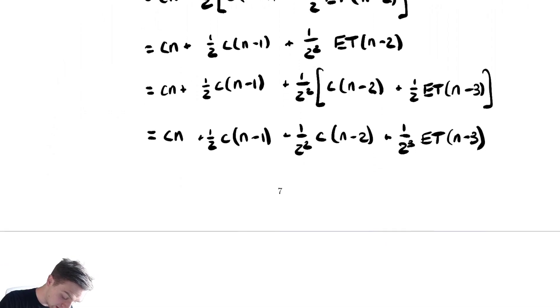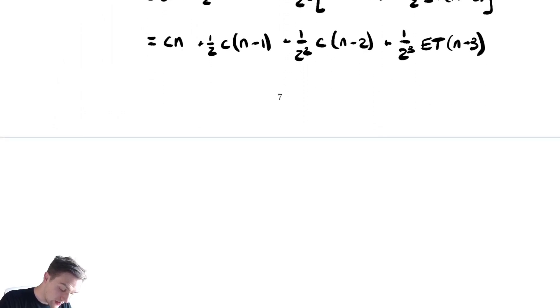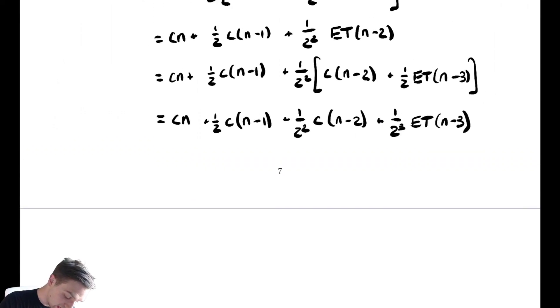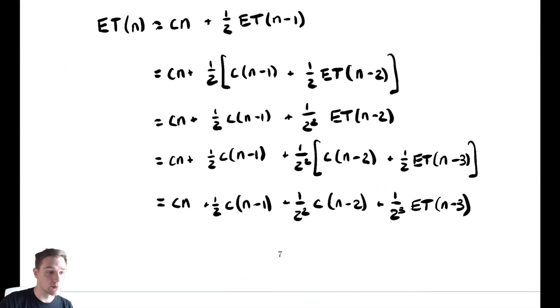Now let's try to identify a pattern here. If we look, we have 3 terms and a T(n-3) and the terms have some nice things. We have c(n-0) and a 2 to the 0. We have a 1/2 and a (n-1), a 1/2 squared, an (n-2), and a 1/2 cubed. All that looks nice.